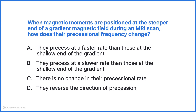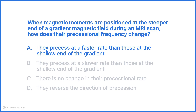The correct answer is A. They precess at a faster rate than those at the shallow end of the gradient. This is because the strength of the magnetic field is higher at the high end of the gradient, causing the magnetic moments there to experience a stronger magnetic influence. As a result, their precessional frequency, or Larmor frequency, increases, leading them to precess faster compared to magnetic moments at the lower end of the gradient.